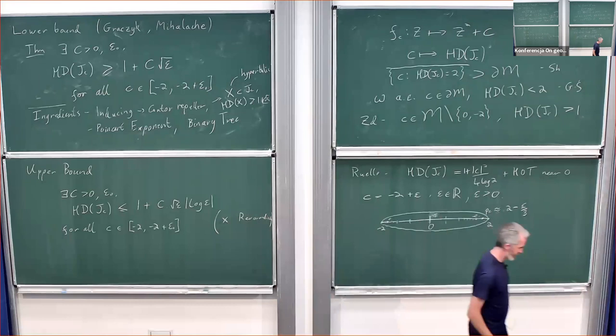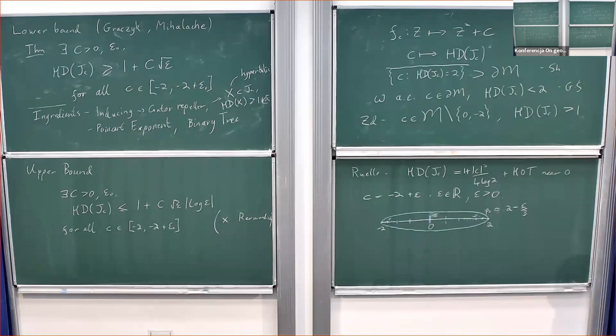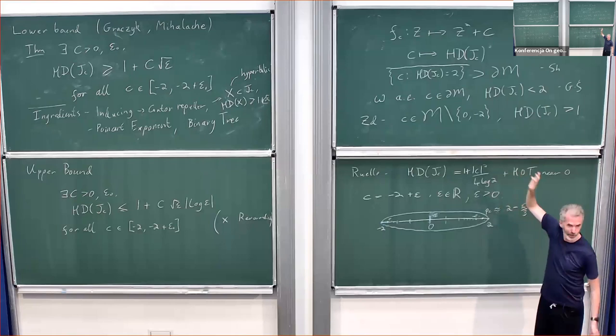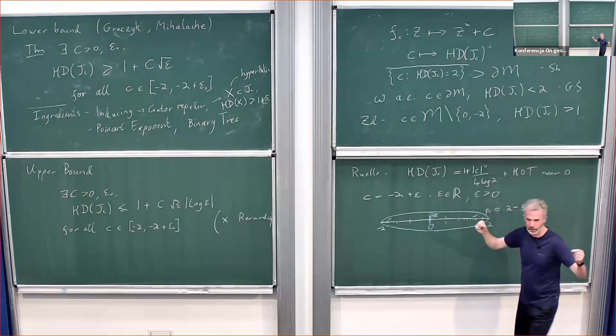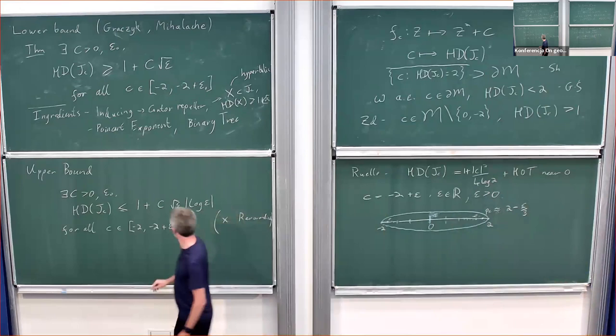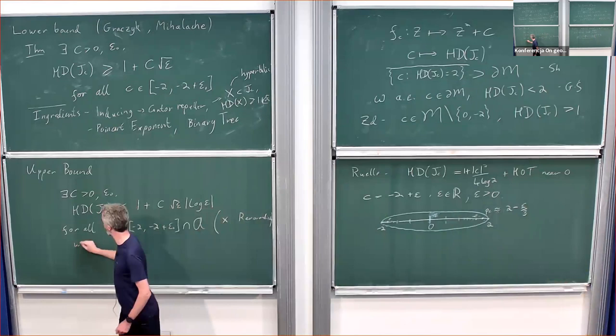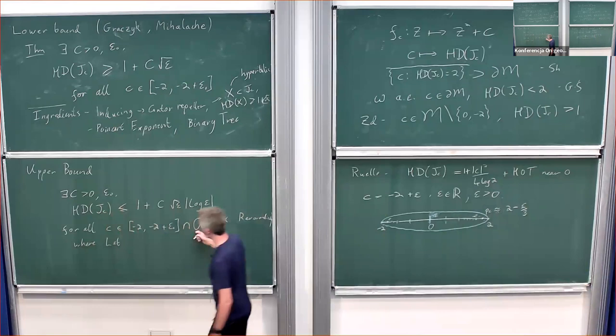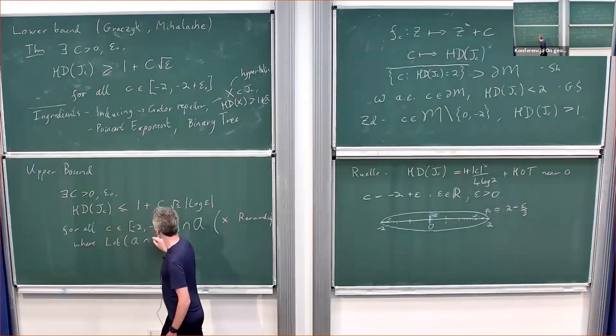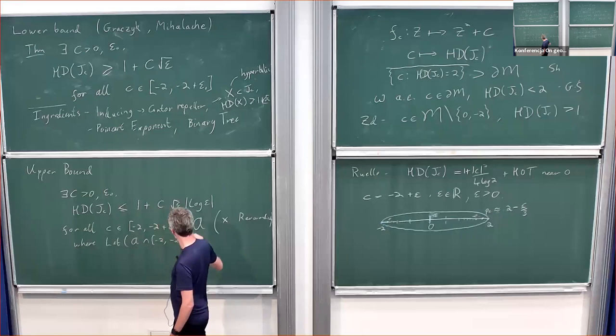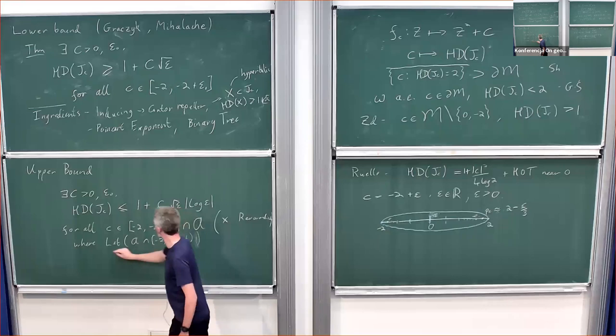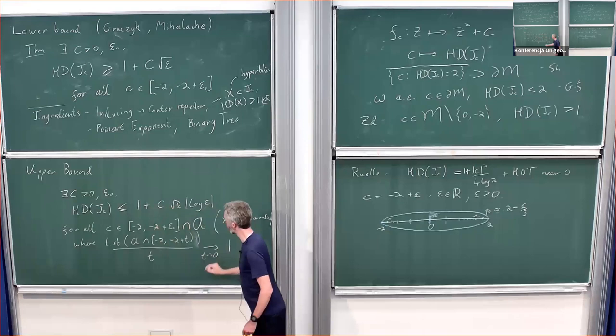So it can only be true on a subset of parameters. We already saw that the Hausdorff dimension is really very discontinuous, and that appears on the real line as well — at minus two the Hausdorff dimension is discontinuous. We have to intersect some set A, and we get a reasonably large subset of parameters: the Lebesgue measure of A intersect (minus two, minus two plus t) divided by t converges to one as t goes to zero, so it's a one-sided Lebesgue density point.